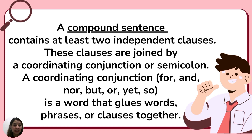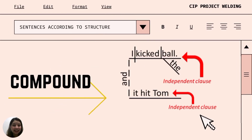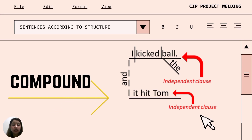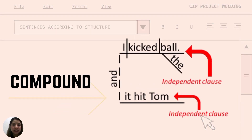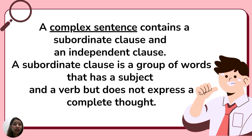The second one is a compound sentence. A compound sentence contains at least two independent clauses. These clauses are joined by a coordinating conjunction or a semicolon. A coordinating conjunction — for, and, nor, but, or, yet, so — is a word that glues words, phrases, or clauses together. Here is an example: I kick the ball, and it hit Tom. 'I kick the ball' is an independent clause, and 'it hit Tom' is also an independent clause. 'And' is a coordinating conjunction joining the two.